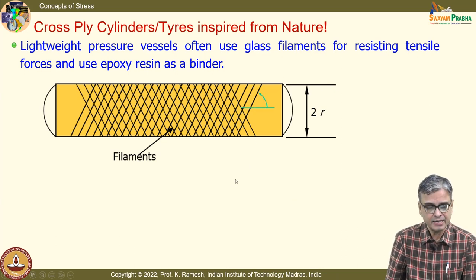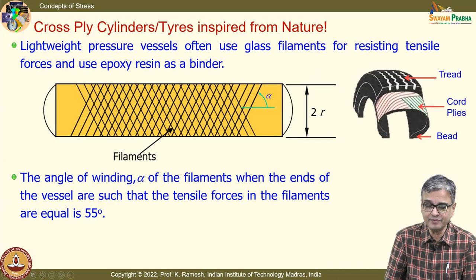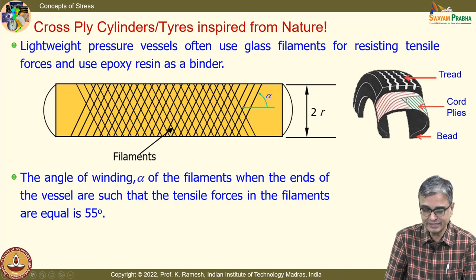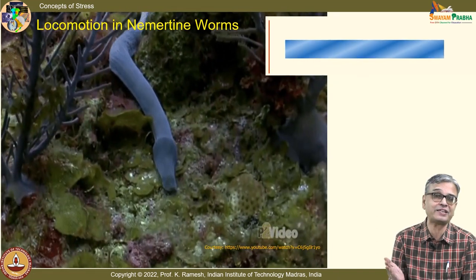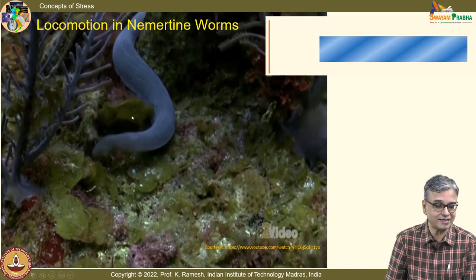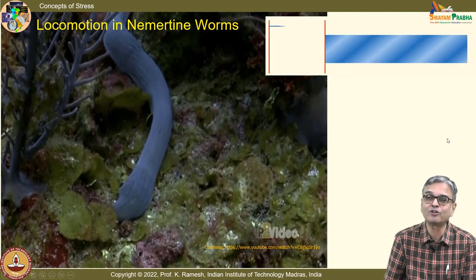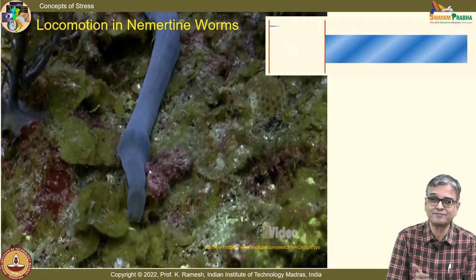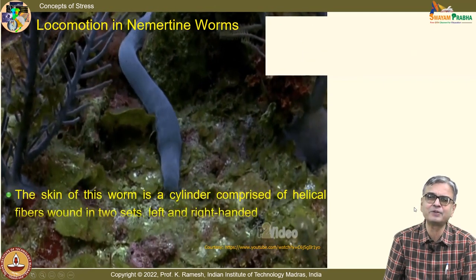If you want to reduce the weight of a pressure vessel, you can use fiber reinforcement. An important piece of knowledge is: what should be the angle of this fiber? Even in a tire — the same tire also supports an aircraft landing and taking off — there is very complex mechanics, with cross-ply fibers. Nature is far superior: a simple worm living under the sea has a body with helically oriented fibers, which it manipulates for locomotion — bulging and then contracting. This is inspired from nature — nature is far superior to human intelligence.